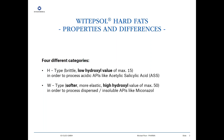Then we have the W type. W stands for the German word 'weich', which means soft. So we have a soft and more elastic mass exhibiting higher hydroxyl values of maximum 50. Due to the fact that the W range contains a certain amount of diglycerides, these W types exhibit slightly higher viscosities. This is important if you are processing dispersed or insoluble APIs like biconazole, because if viscosity is too low, there is a permanent danger of API sedimentation to the tip of the finished suppository, resulting in non-uniform API distribution.